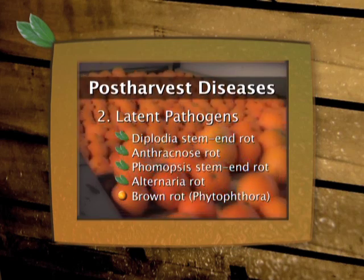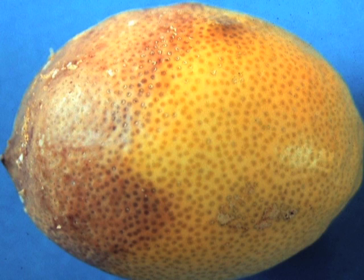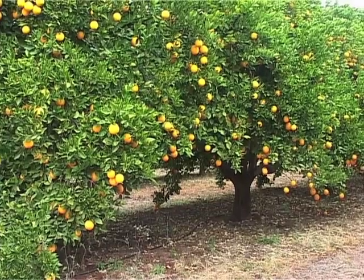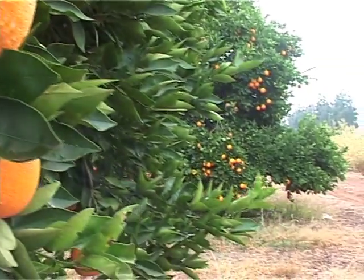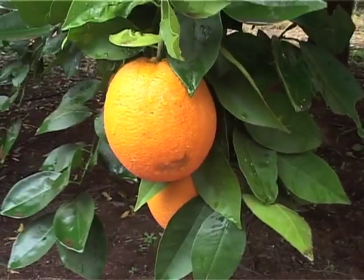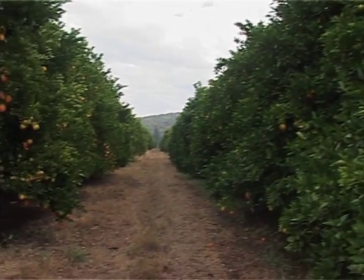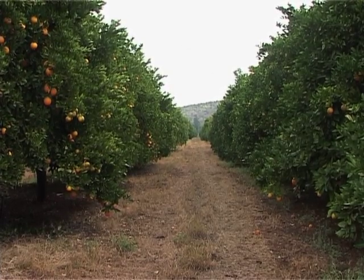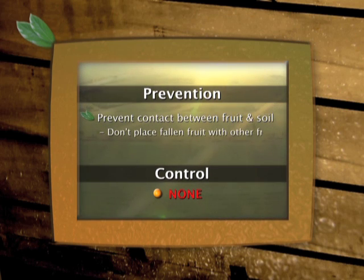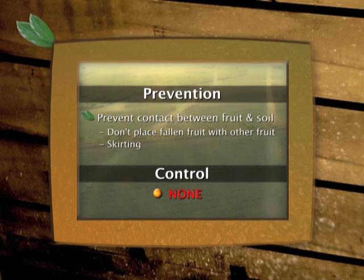Phytophthora brown rot can be devastating, especially during seasons of high and frequent rainfall during harvesting, when fruit is more likely to come into contact with wet soil. This disease cannot be controlled by any registered fungicide, and prevention is therefore the only cure. When fruit comes into contact with wet soil, or if rainwater splashes up onto low-hanging fruit, Phytophthora spores, which are present in the soil, get onto the fruit and penetrate the rind within 3 hours at temperatures between 12 and 20 degrees Celsius. Fruit must be prevented from coming into contact with soil, and pickers must never pick up fruit that has been in contact with the soil and place it with fruit destined for the packhouse. Trees must be skirted so that branches will not bear fruit that hangs low enough for rainwater to splash onto it.